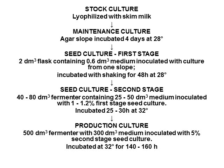The production culture is prepared from the second seed culture. A 500 cubic decimeter fermenter with 300 cubic decimeters of medium is inoculated with 5% second stage seed culture. It is incubated at 32°C for 140 to 160 hours.